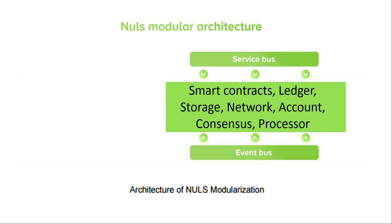The first feature is modularization. Any blockchain will have essential components like smart contracts, a ledger (the record of transactions), storage, network, account, and consensus. These are all basic essential components of any blockchain. In the typical blockchain, all of these components are kind of weaved together into an inseparable mess. NAUS has something called the module manager, which splits all of these essential components into separate modules.